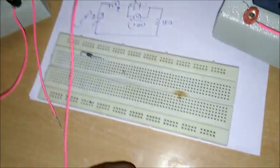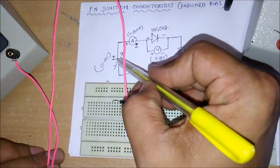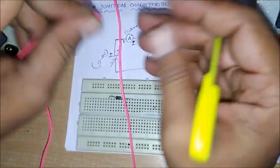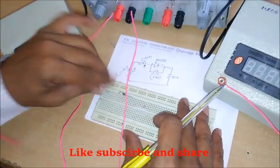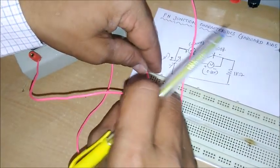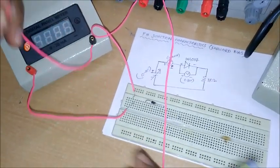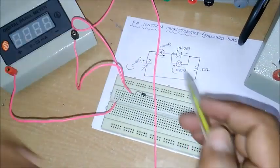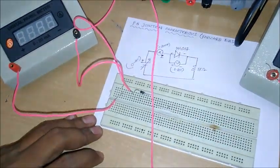Now let us proceed with the connections. We start from the positive supply of the regulator power supply. The positive supply is connected to the positive terminal of the milliammeter. Then the negative of the ammeter is connected to the diode, and the negative end of the diode is connected to the 1 kilo ohm resistor.